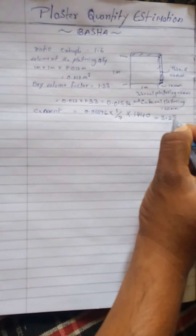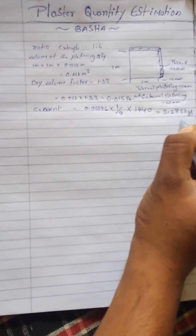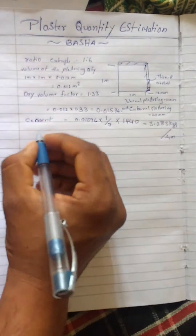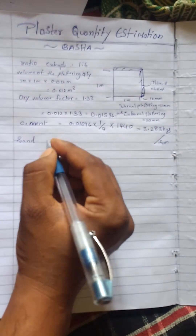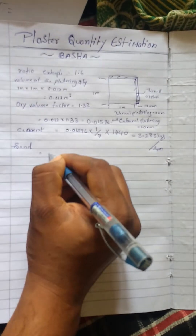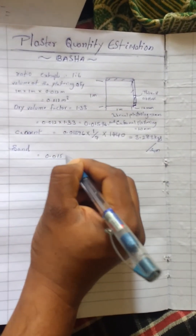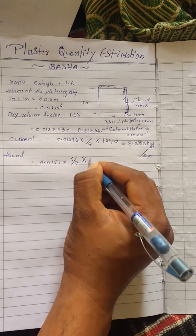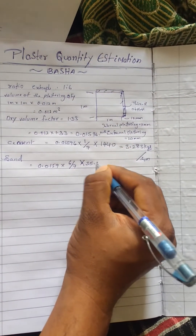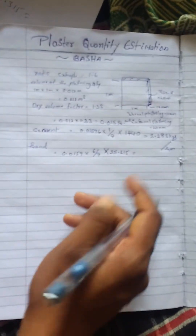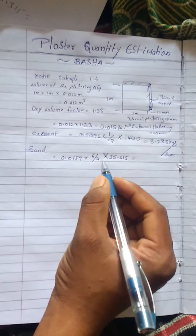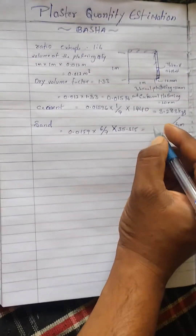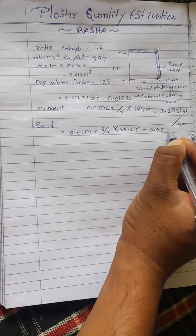That gives 3.283 kg per square meter. Next, for sand: sand is six parts. The dry volume of one square meter is 0.01596, multiplied by six parts divided by seven, then converted to CFT using 35.315. This gives 0.4831 CFT of sand per square meter.